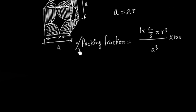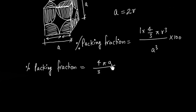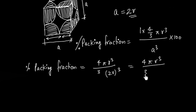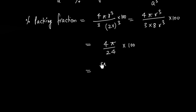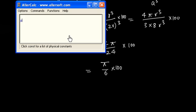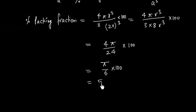For percentage packing fraction, multiply by 100. Substituting a = 2r: (4/3 πr³) / (8r³) × 100 = (4π / 24) × 100 = (π/6) × 100. Since π/6 ≈ 0.52, this gives 52.3%.